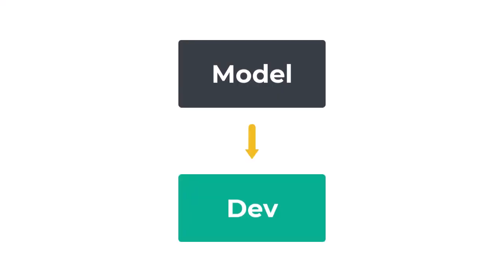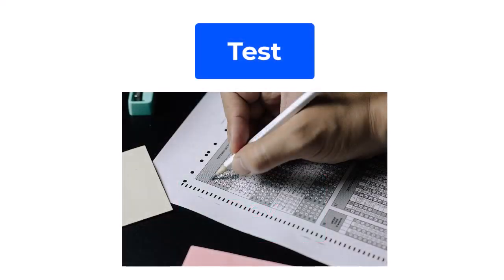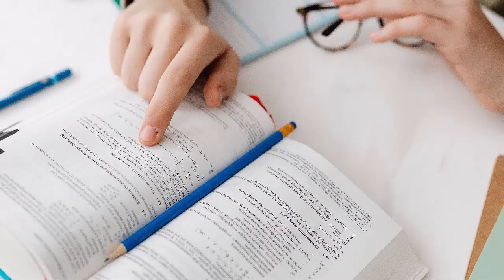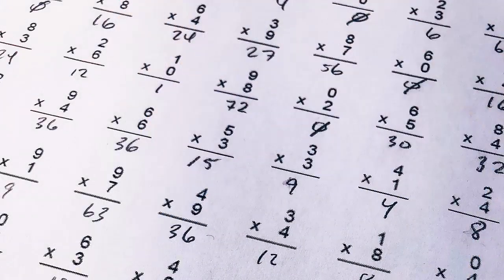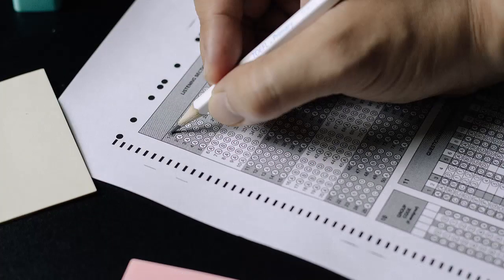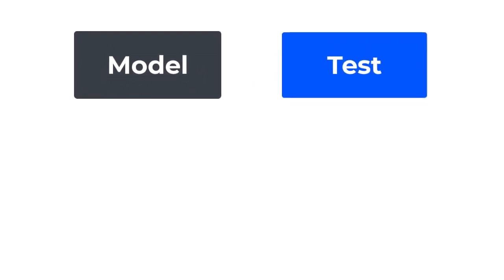Similar to how you check your progress with practice questions, your model uses the Dev set to see if it's learning correctly. Lastly, the Test set is like an exam. You've studied from your textbook, the Train set, and practiced with questions, the Dev set. Now it's time to see how well you really understand what you've studied. The exam includes unfamiliar questions to ensure that you haven't simply memorized answers, but instead understand the process to arrive at them. For models, the Test set includes examples it has never seen before, which provides insights into how well the model can perform in real-world scenarios.